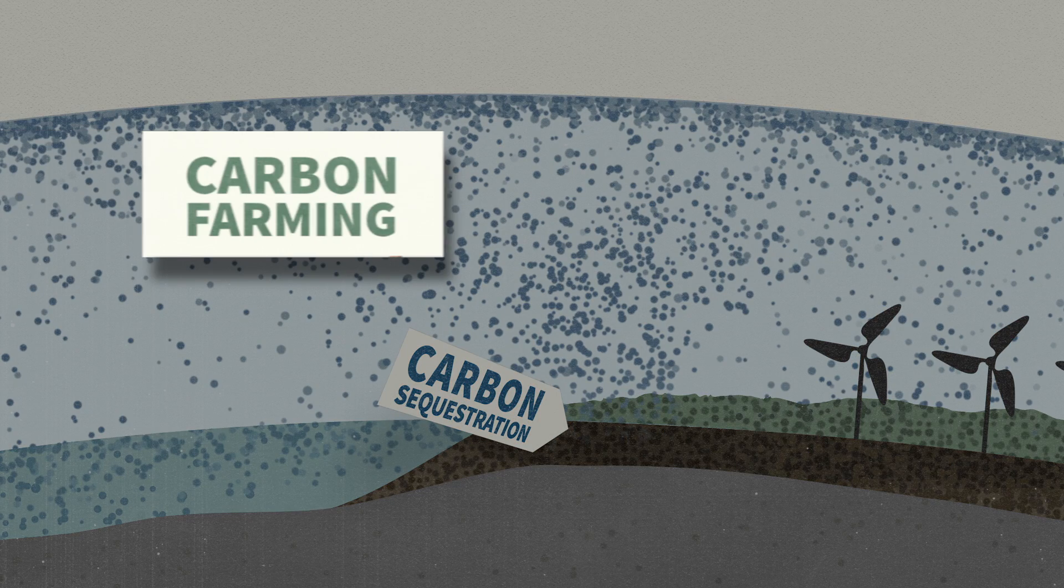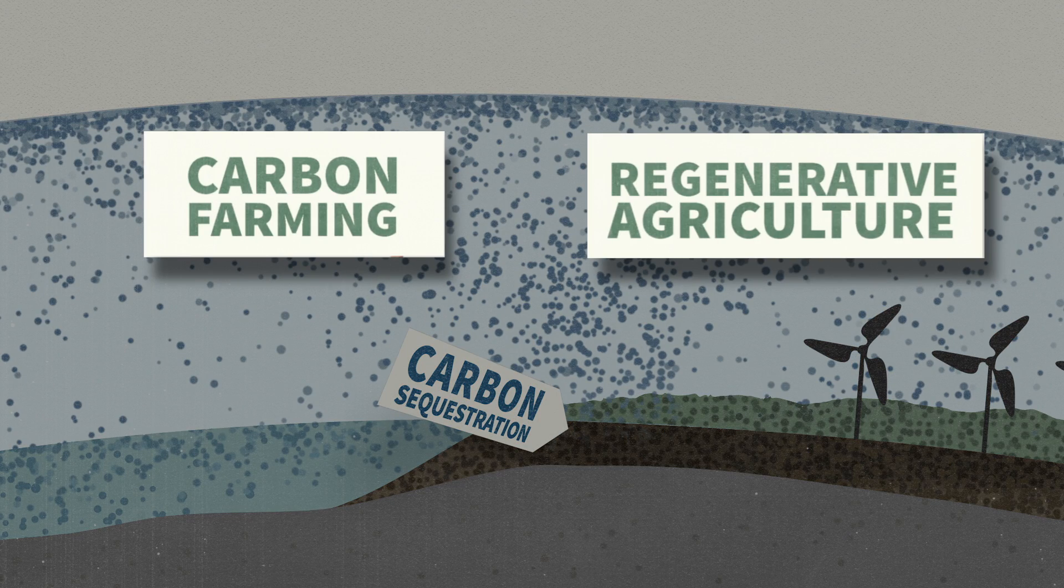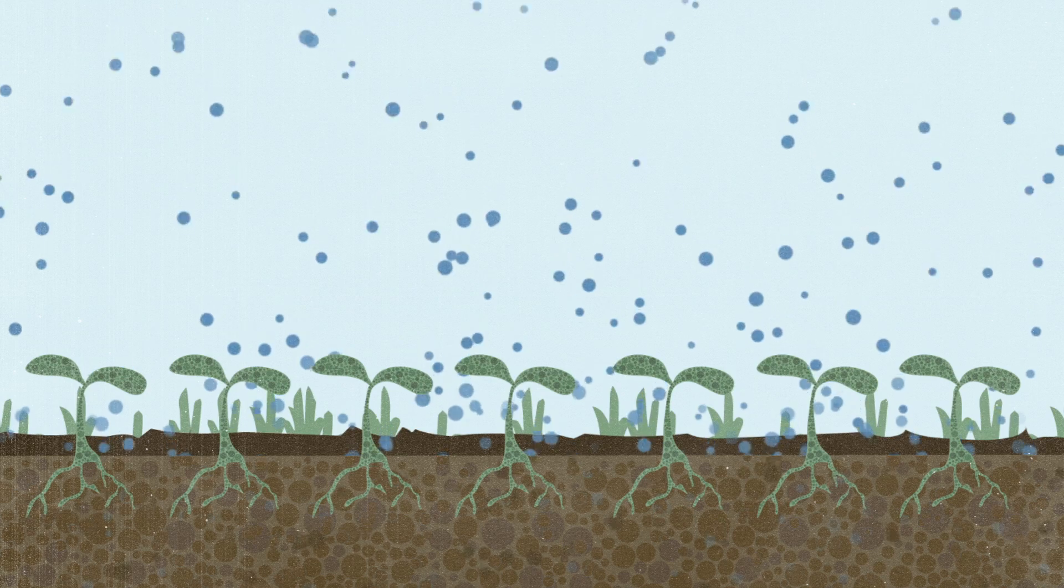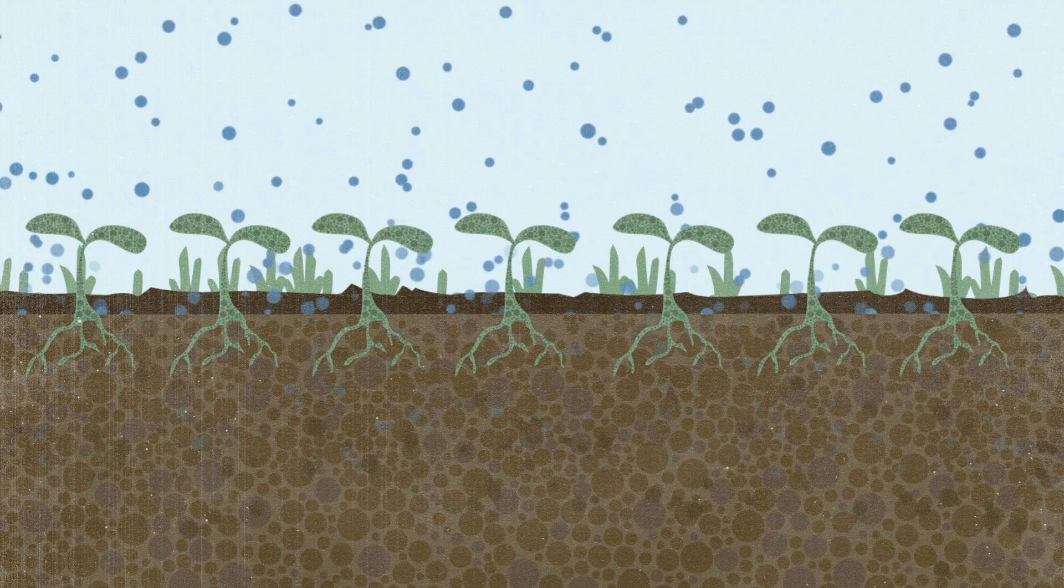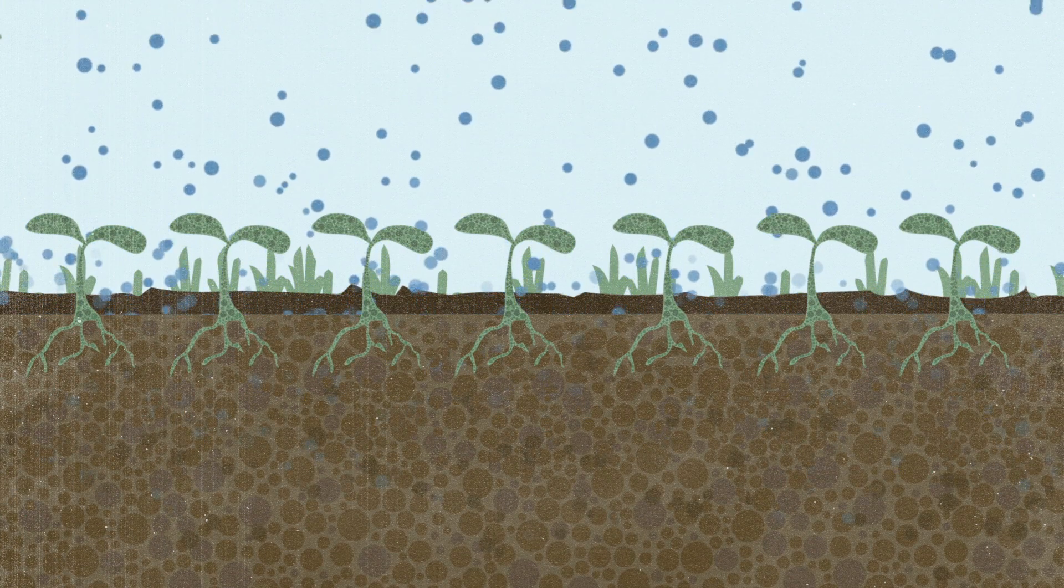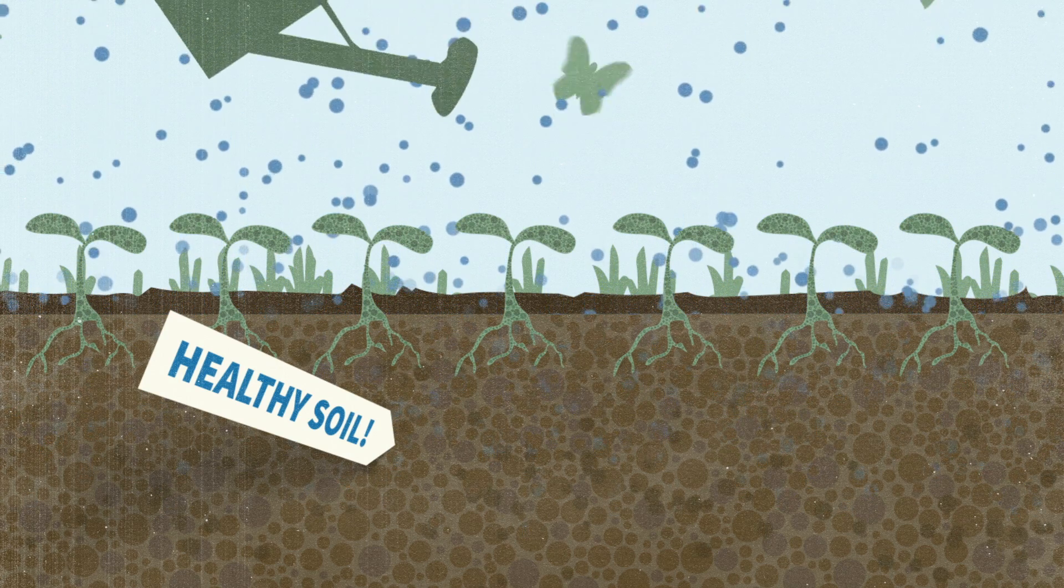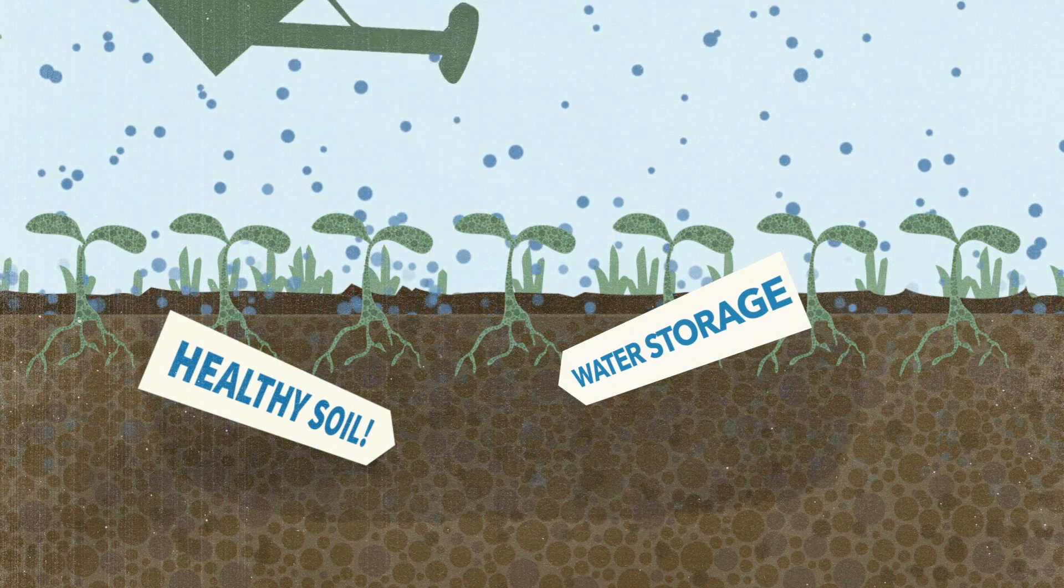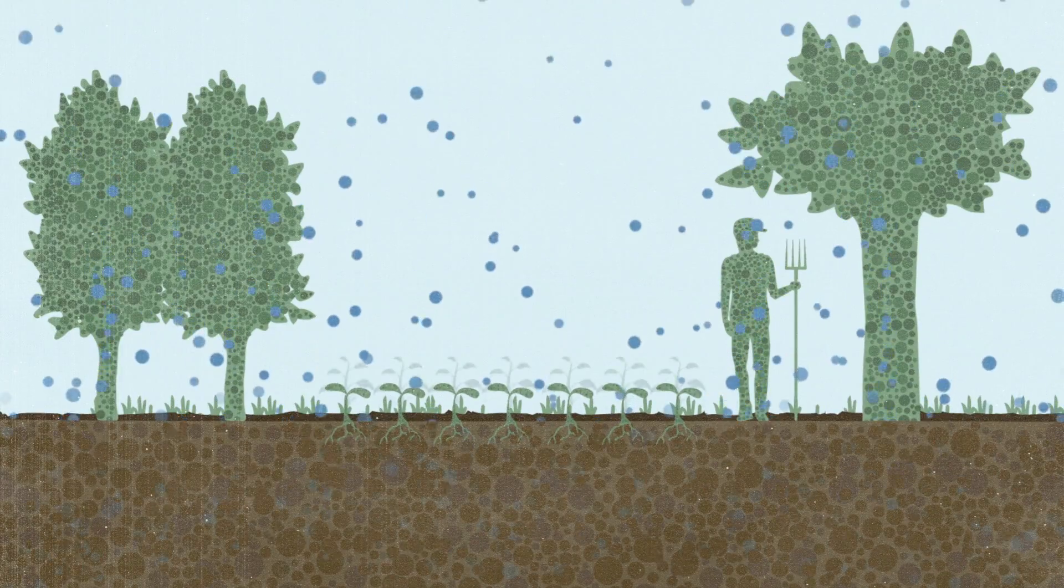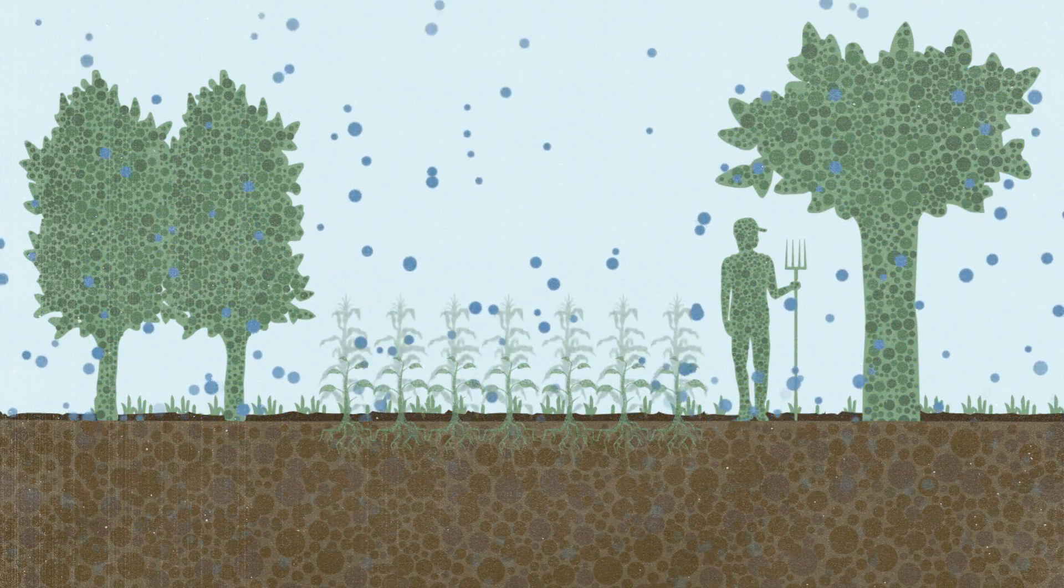This is carbon farming. This is regenerative agriculture. Unlike more carbon in the atmosphere, more carbon in the ground is good for us. It makes healthy soil, which is nutrient rich and full of life and holds way more water. This means more nutritious food and crops that are more resilient in the face of drought.